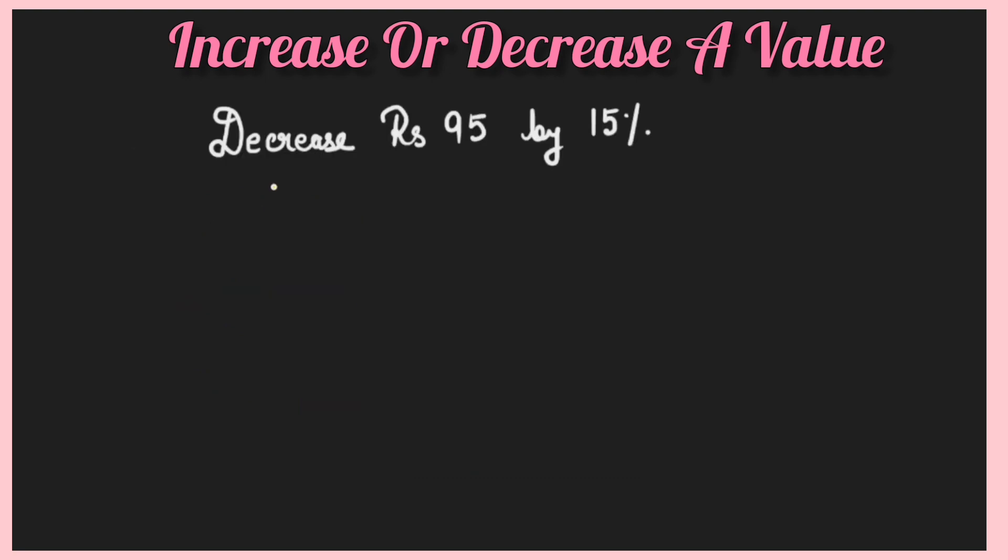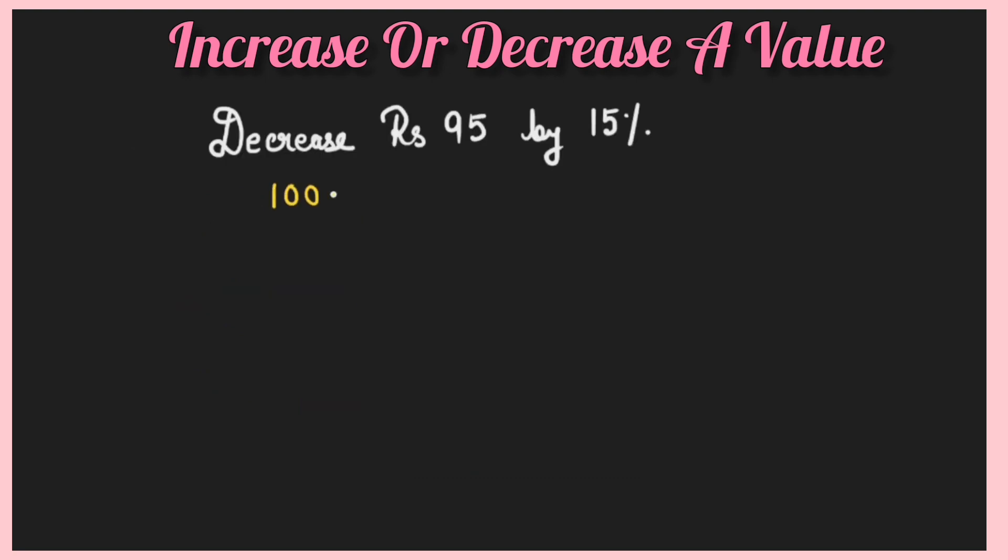Same way you can do the decrease sum also. Decrease rupees 95 by 15 percent means I'm giving you 95 rupees and you need to decrease it by 15 percent. That means it will become less. Follow the same process. Before, we did 100 plus the percentage. Here you will do 100 minus percentage. So 100 minus 15 percent is 85 percent. You just need to multiply 85 into 95. Whatever you get, 8075 divide by 100. From the right hand side, put the point, two digits, then put the point. That's your answer: 80.75.